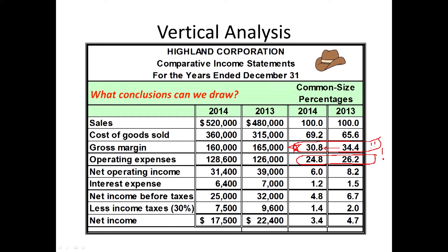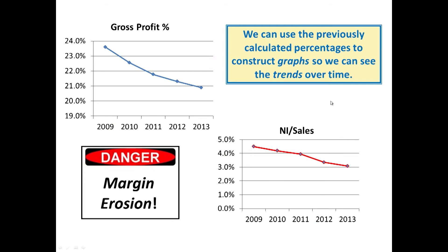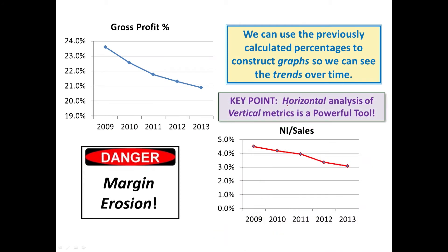Is the cost of our goods that we sell increasing and we're not able to pass those on to the customer? Or we're just not passing them on? But our margin is eroding. We take everything divided by sales for the year to get all of these numbers. Horizontal analysis of vertical metrics is a powerful tool.